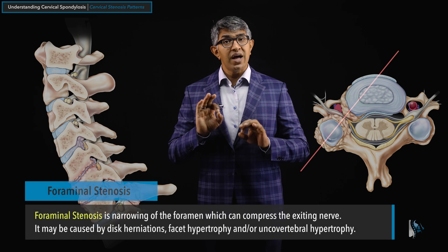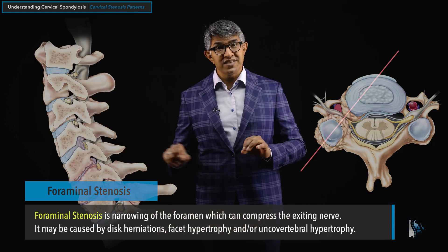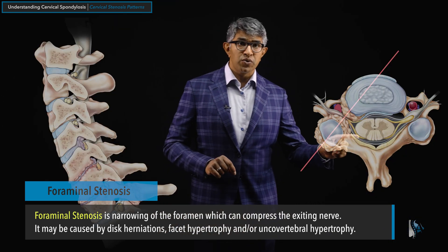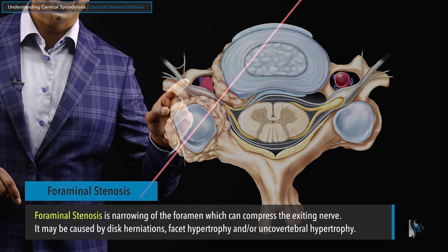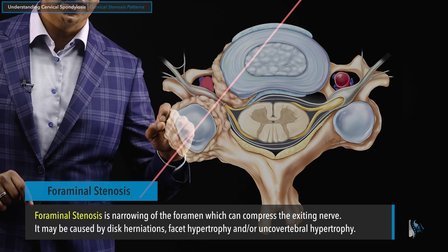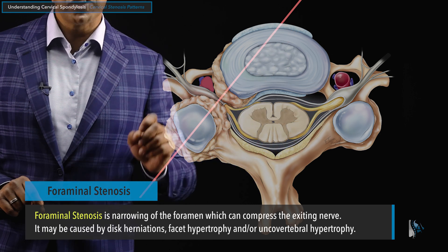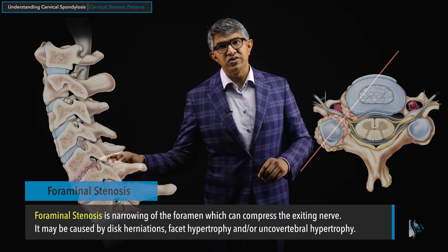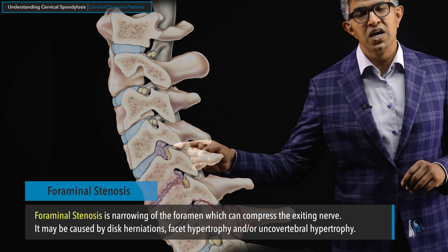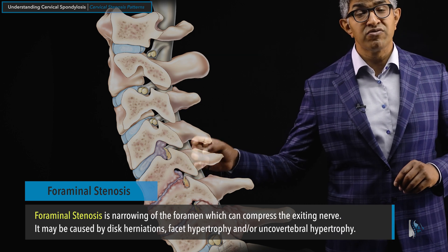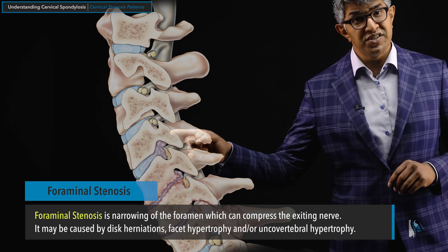When people have foraminal stenosis, that means narrowing of the porthole — not necessarily narrowing of the spinal canal. Here you can see the spinal canal looks okay, but there's tight narrowing on the right side at one level, while the other foramen is wide open. Looking at the oblique picture, you can see compression at the C4-5 level from disc herniation causing pressure on the nerve — so this would be C4-5 foraminal stenosis on the right side.